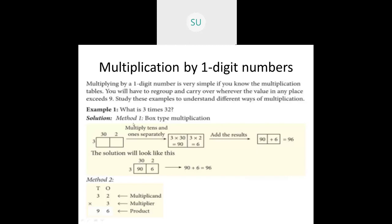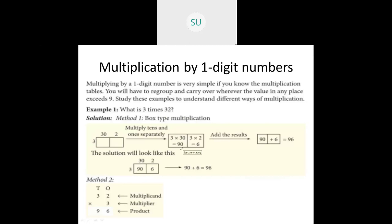The first example: what is 3 times 32? We'll multiply 32 with 3. There are two methods. First is the box-type multiplication. For 32, we expand and write it as 30 and 2. Multiply the tens and ones separately. First multiply 3 with 30 — 3 into 30 is 90.